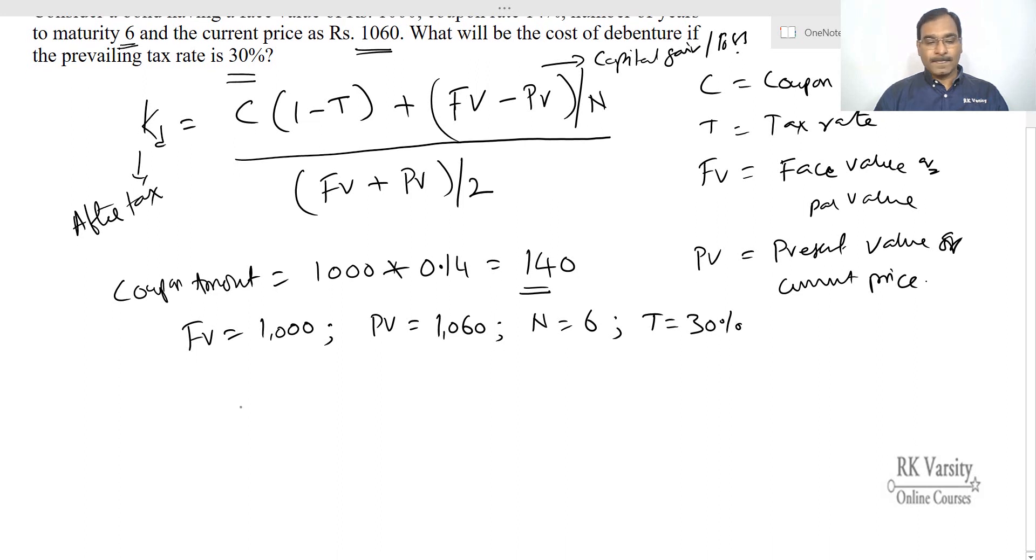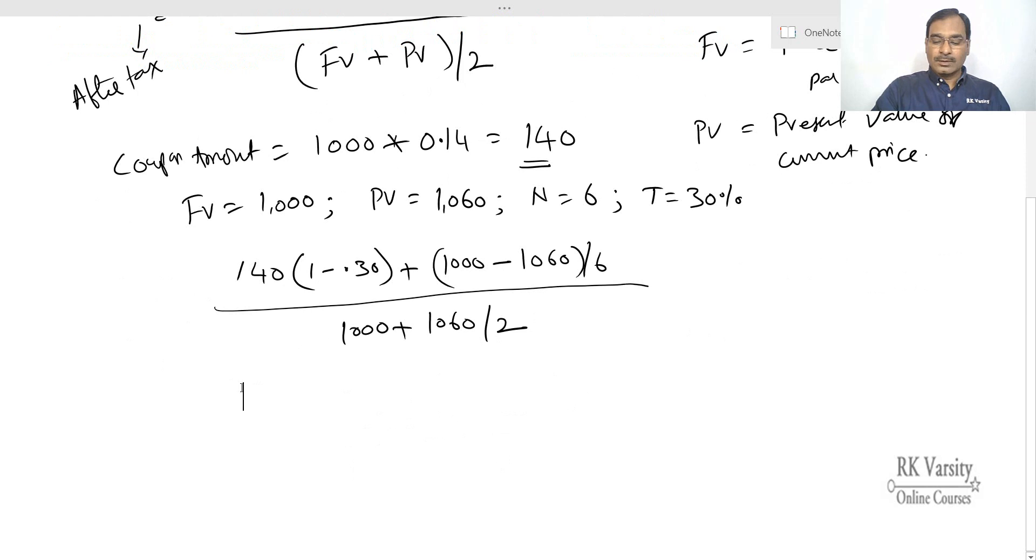Using this, we'll calculate the cost of debt: 140 into (1 minus 0.3) plus (1000 minus 1060) upon 6, divided by (1000 plus 1060) upon 2. This gives you 140 into 0.7, and 1000 minus 1060 upon 6.